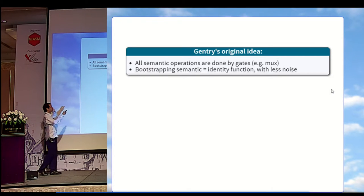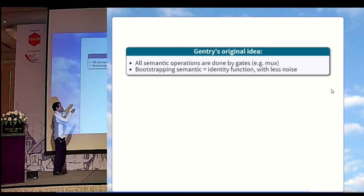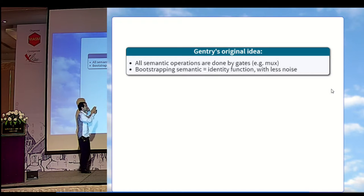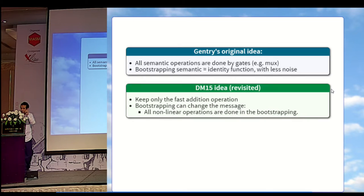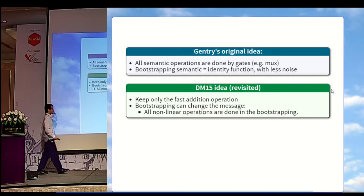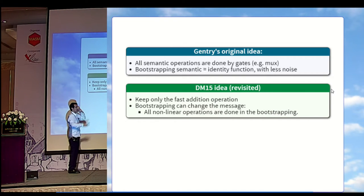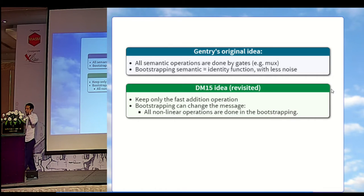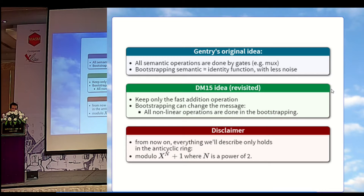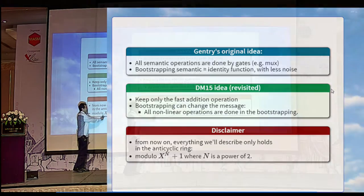Gentry's original idea was that all semantic operations have to be done by gates — for example, the MUX gate we saw earlier — and the bootstrapping semantic will just be the identity function, which reduces the noise. What was added by Ducas and Micciancio's scheme is that we keep the very fast addition between ciphertexts, but all other nonlinear operations are done during the bootstrapping, which means that now the bootstrapping algorithm will be able to change the plaintext. Everything we'll say from now is only valid modulo x^n + 1.